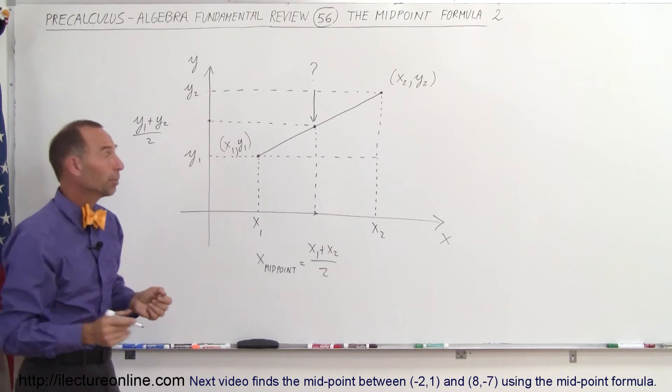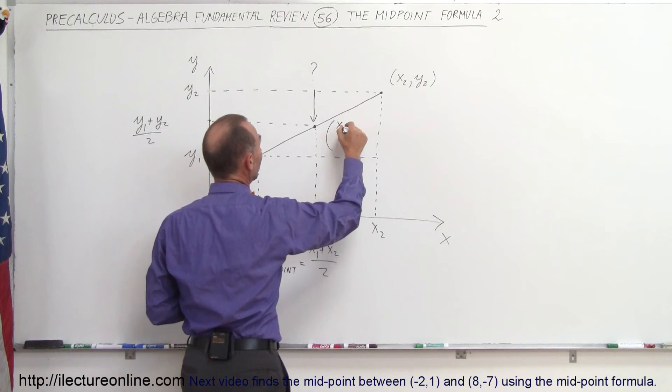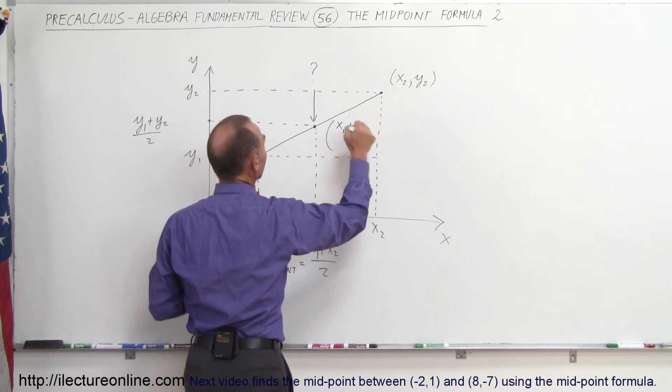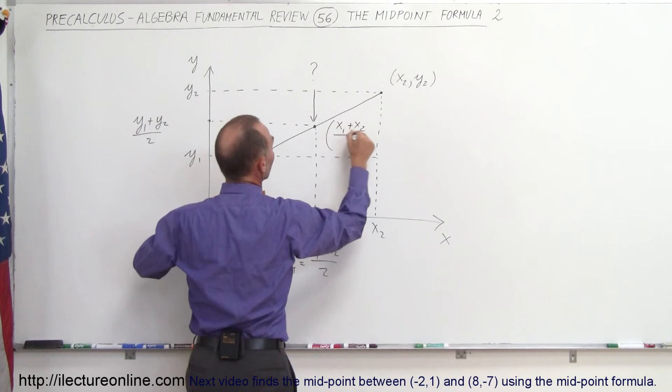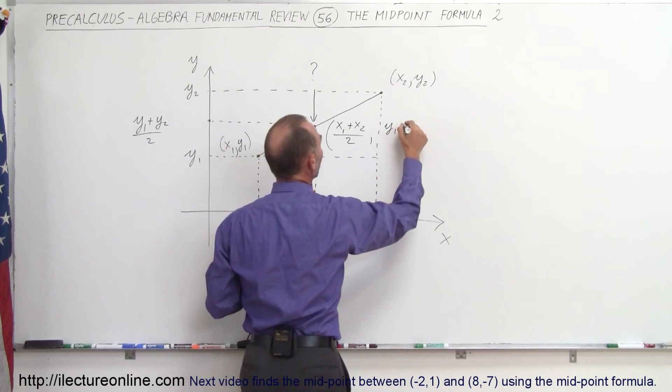So the only thing we have to do to find the midpoint between any two points in the XY plane is to find the X coordinate by saying this is equal to the sum of the two X coordinates of the two points, divided by 2.